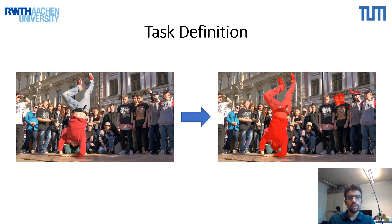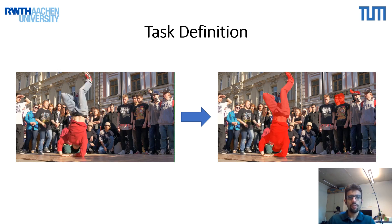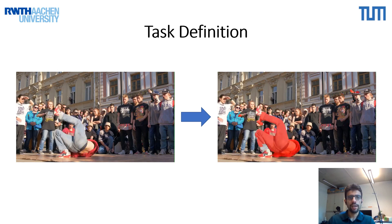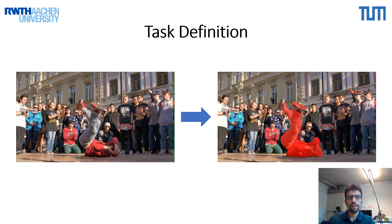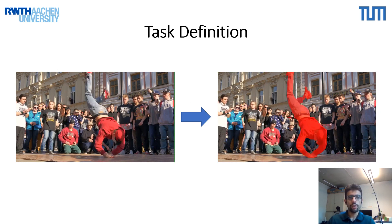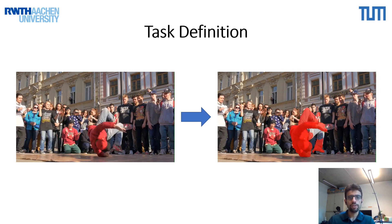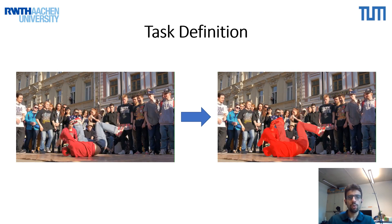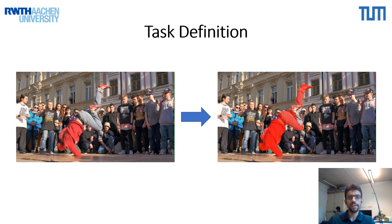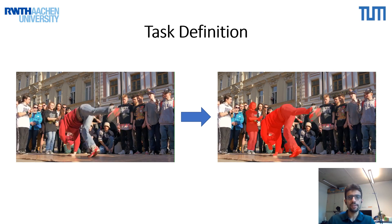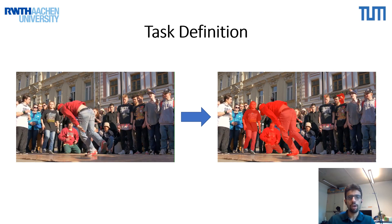We can look at this example of a video from the Davis dataset to better understand the task. Here we have a person dancing and an audience watching him. Now even though we have several persons in the video, only the dancer should be segmented since he is the dominant foreground object, whereas the audience is part of the background.